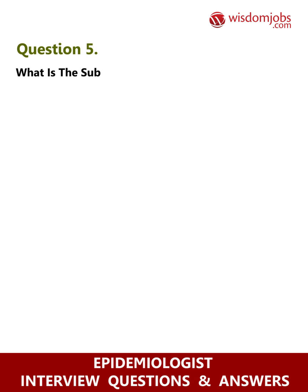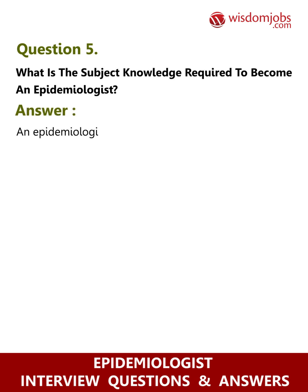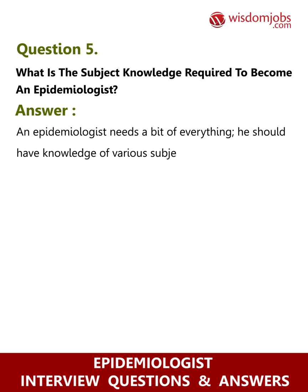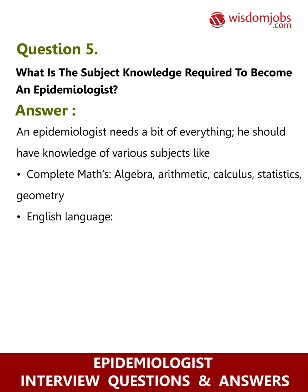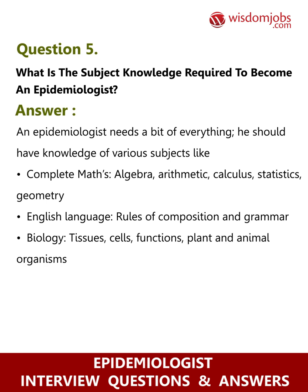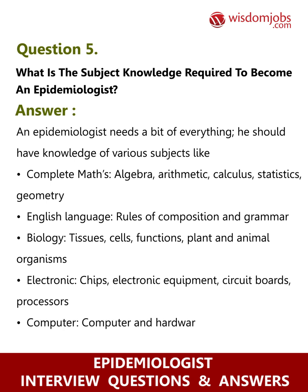Question 5: What is the subject knowledge required to become an epidemiologist? Answer: An epidemiologist needs a bit of everything. He should have knowledge of various subjects like mathematics — algebra, arithmetic, calculus, statistics, geometry — English language, rules of composition and grammar, biology including tissues, cells, functions, plant and animal organisms, electronics, circuit boards, processors, and computer hardware, software applications, and programming.